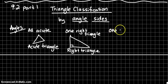If your triangle has one obtuse angle, it is called an obtuse triangle.